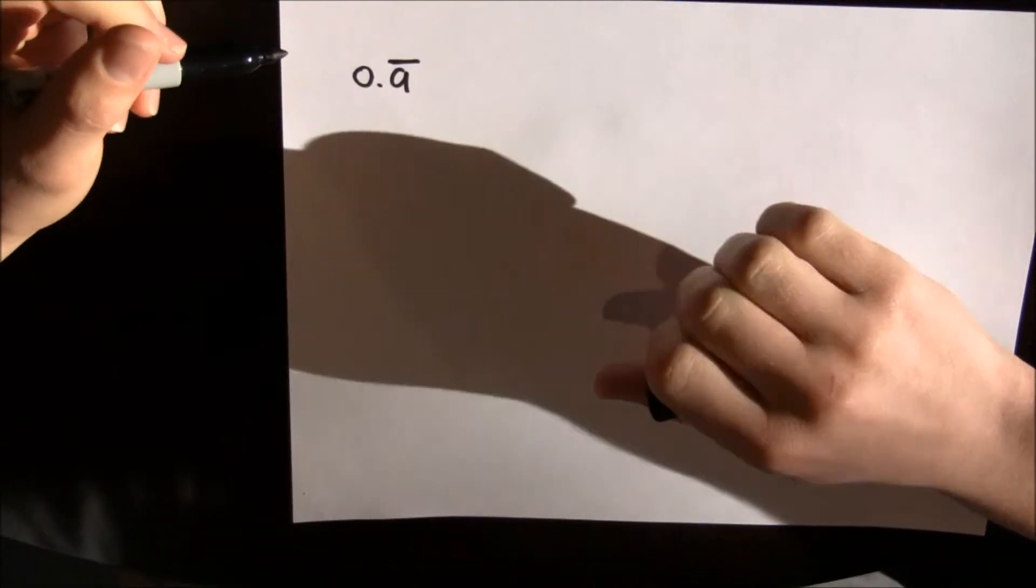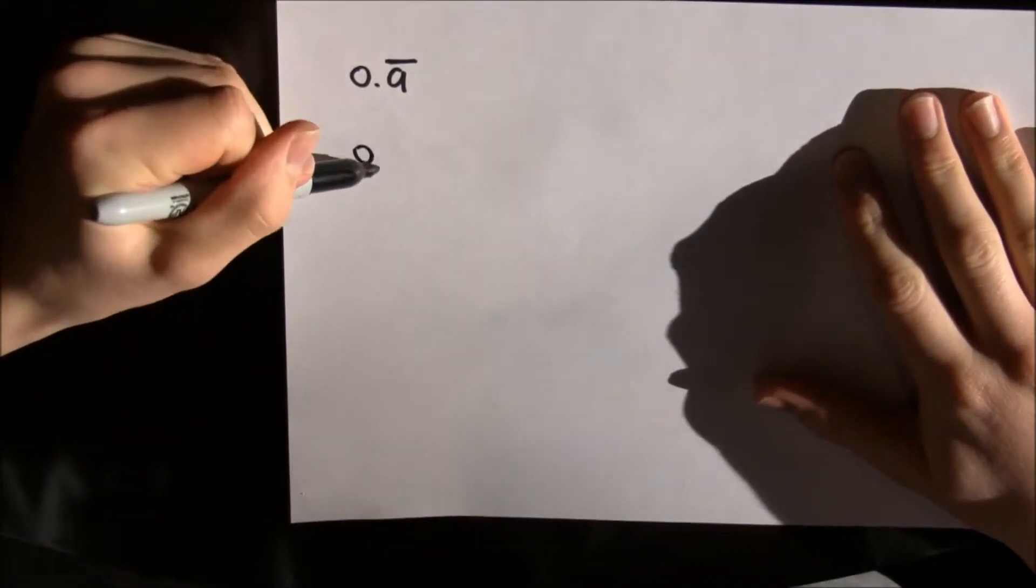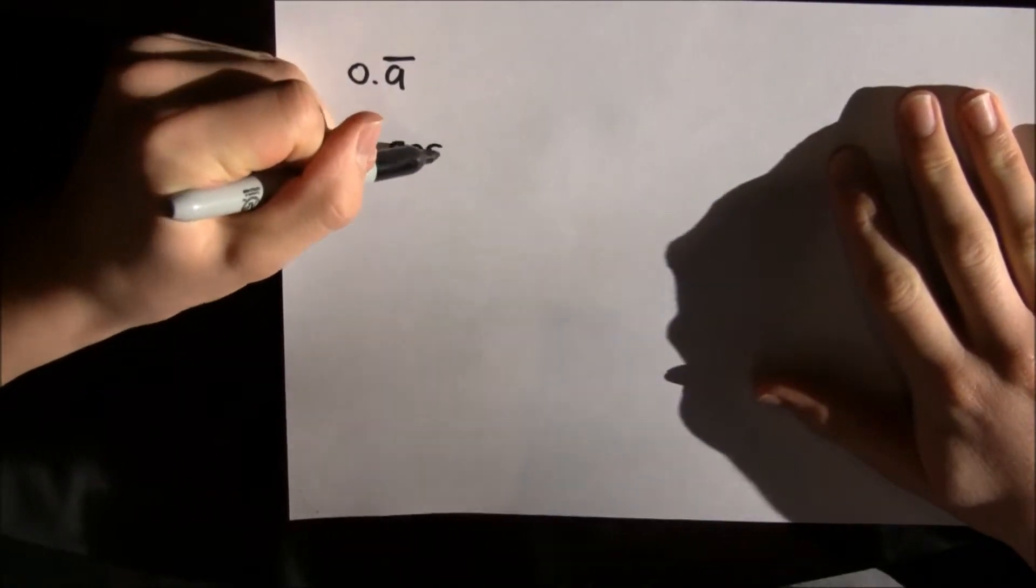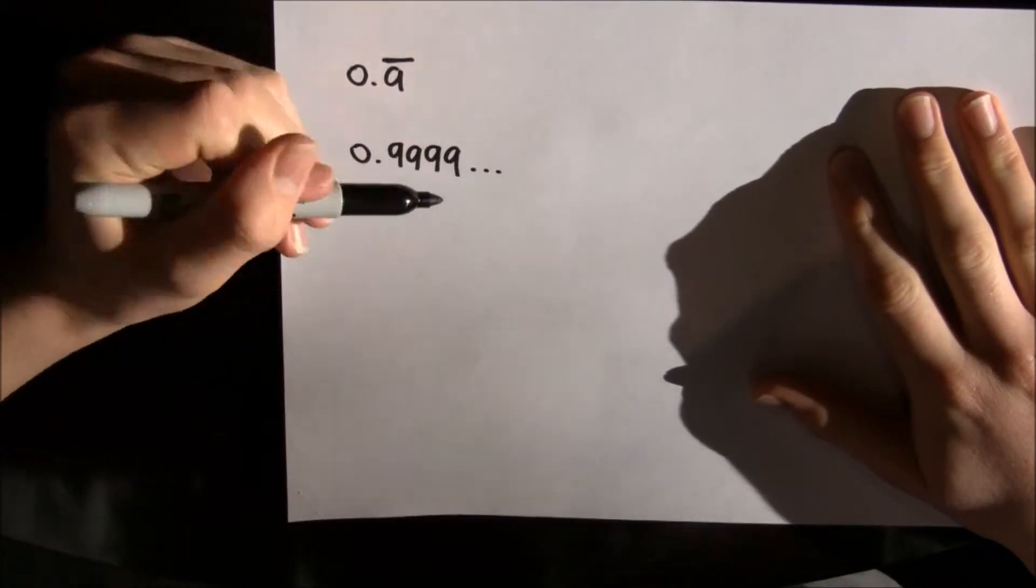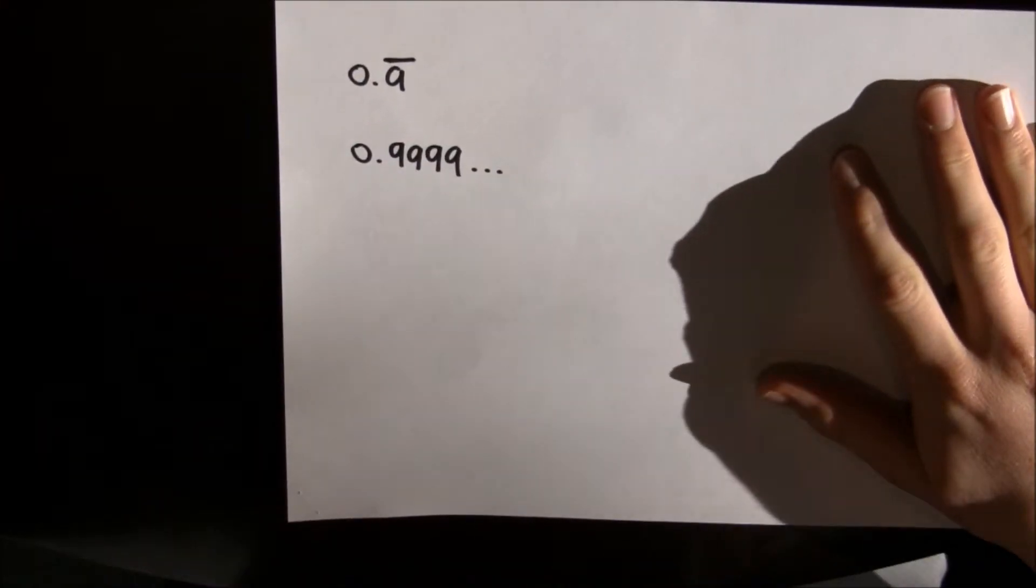What is 0.9 repeating? It's basically just 0.9999 and that goes on forever.